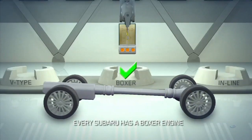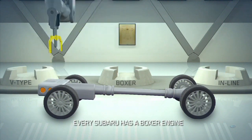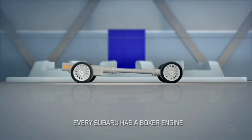The Subaru Boxer engine, with its low centre of gravity, helps keep the vehicle more balanced and more stable.